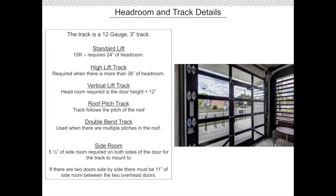An overhead sectional door with an ADA compliant pass door has a 12-gauge 3-inch track. This type of overhead door needs a minimum of 24 inches of headroom. When you have more than 36 inches of headroom, your track will move to a high lift track. If you would like to use a full vertical lift track, you will need the door height plus one foot of headroom. Headroom is one of the most important details in an overhead sectional door, so be sure to have this information included in your specs.